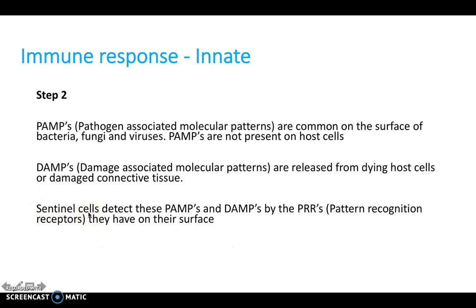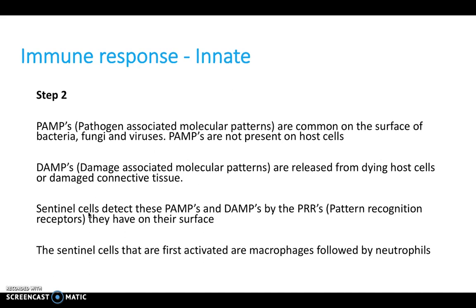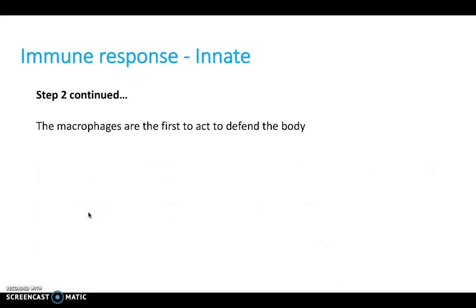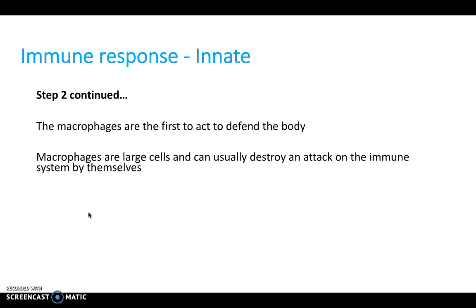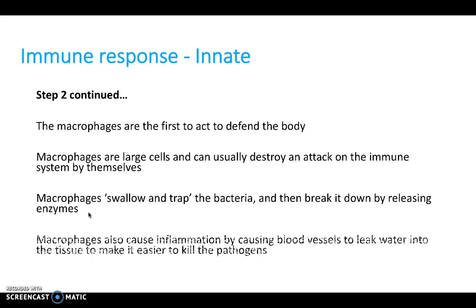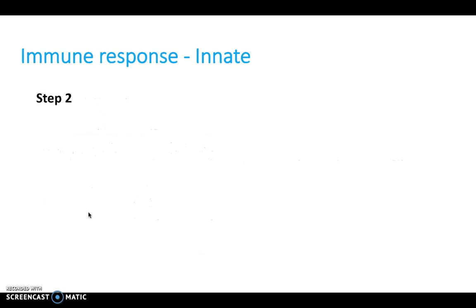Sentinel cells are those guard cells always traveling around looking for PAMPs and DAMPs. The first sentinel cells activated are macrophages, followed by neutrophils. Macrophages are large cells that can usually destroy an attack by themselves — we often don't even know an attack has happened because macrophages deal with it so quickly. Macrophages can also cause inflammation by causing blood vessels to leak water into tissue, which we notice as redness or swelling.